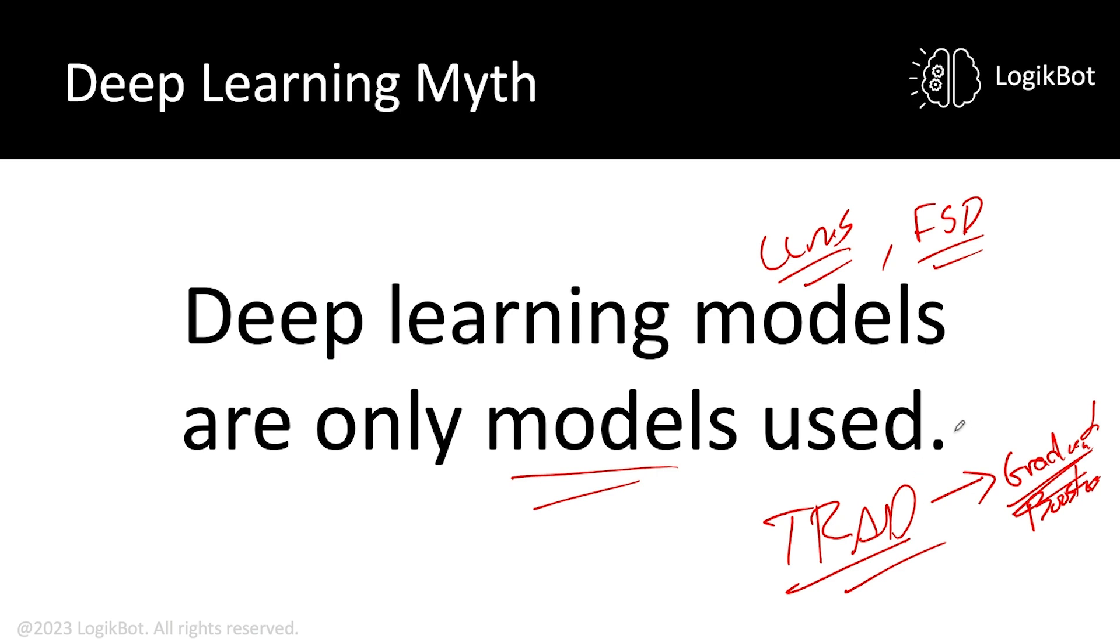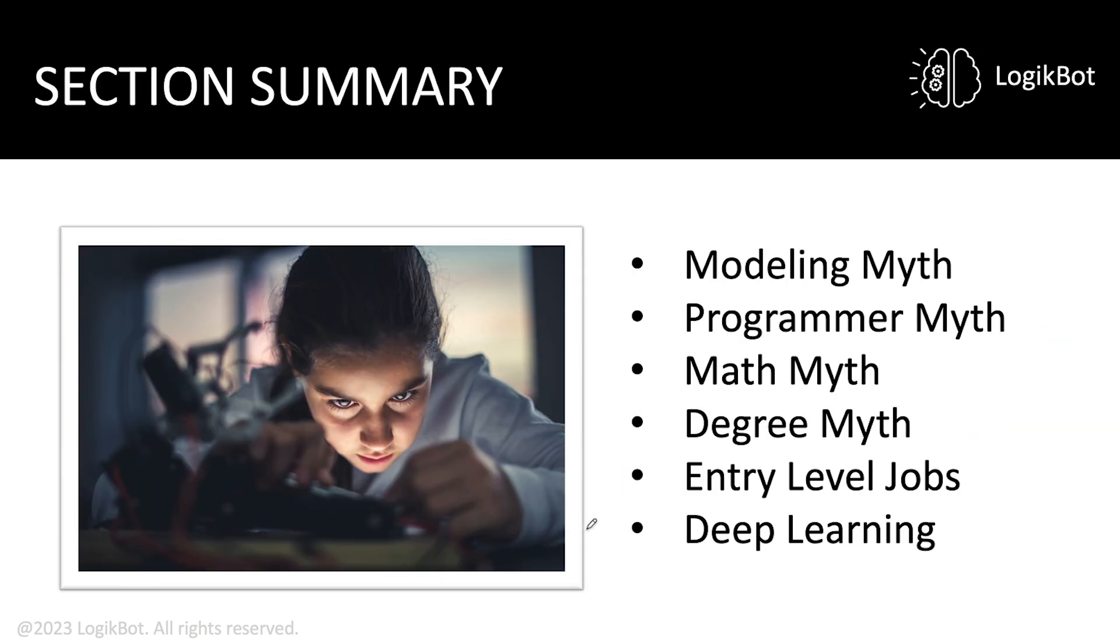That's it. Why? Because nothing beats them. They are the best model for almost every structured data problem. And the two most frequently occurring structured data problems in the real world are classification, that's number one, and regression, that's number two. And guess what excels at these problems? Classification and regression. Gradient boosters. Deep learning models can't beat gradient boosters.